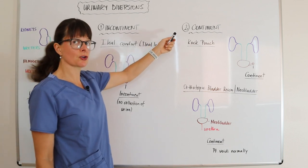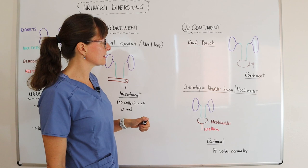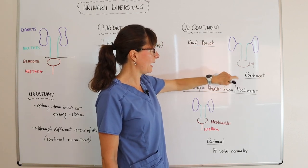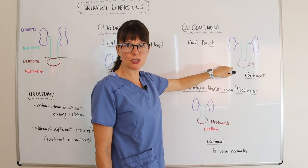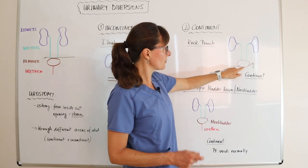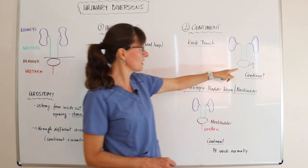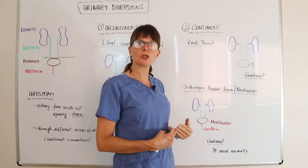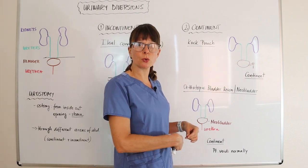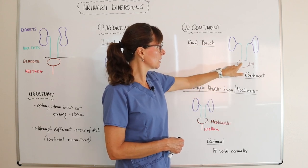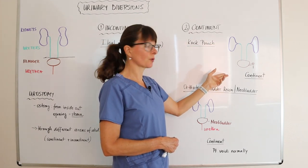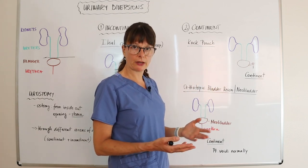Continent urinary diversions are more comfortable for the patient. One commonly used option is called the Kock pouch. Here we have the kidneys and the ureter, and instead of the bladder, out of the small intestine — sometimes the large intestine — we have created a pouch, an artificial reservoir. From that reservoir, a part of the small intestine comes to the surface of the skin at the stoma, where we can insert a catheter and drain the urine through the abdominal wall. Because we have that pouch serving as a reservoir, this is a continent urinary diversion, requiring the patient to self-catheterize as frequently as instructed.